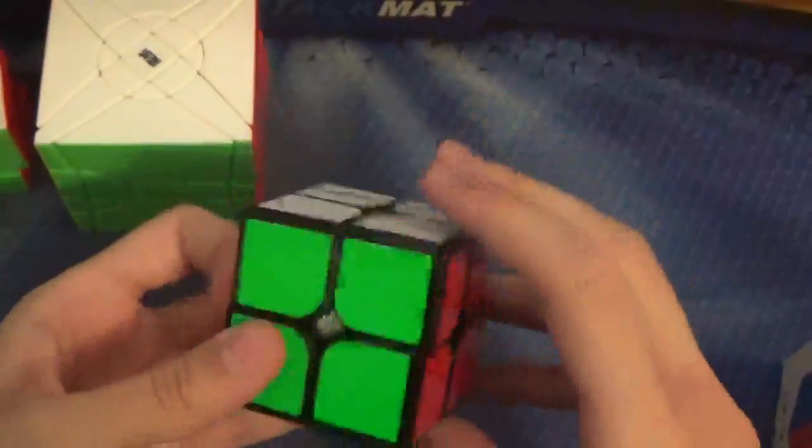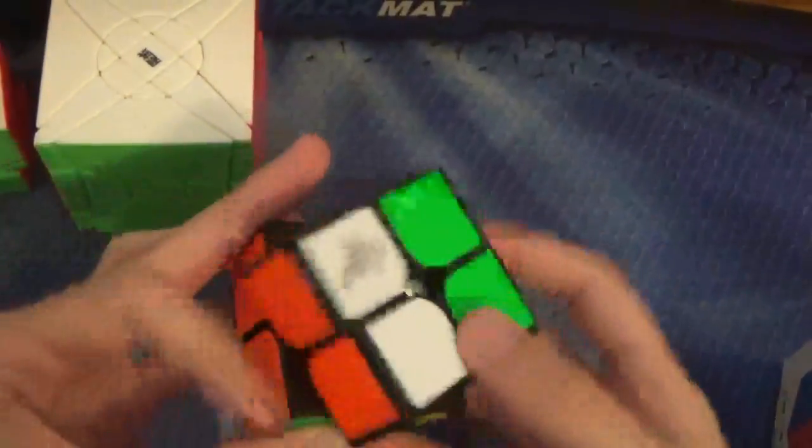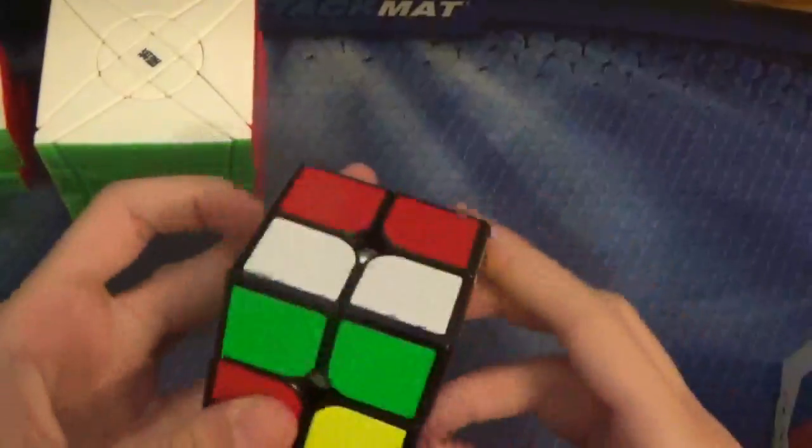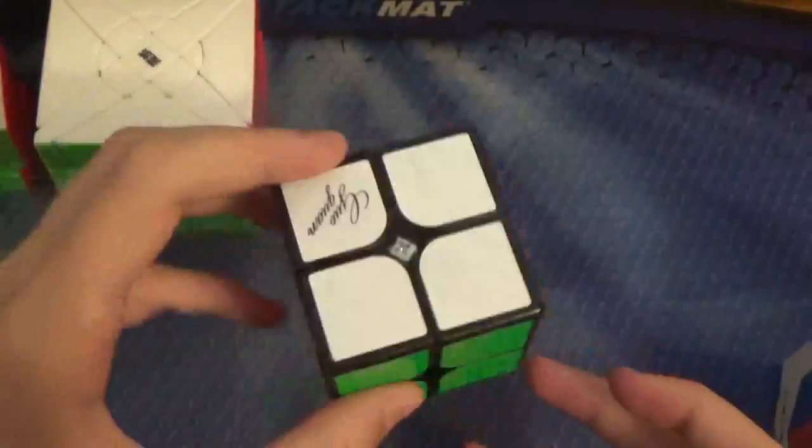You can definitely feel the click. Yeah, the click isn't overpowering, but it does click into place really nicely. Wow. So, I'm really impressed with this. If you like the Guhong, I would definitely recommend the magnetic version. It definitely adds some stability and just helps the cube click into place really nicely. So, out of the box, really impressed by this.